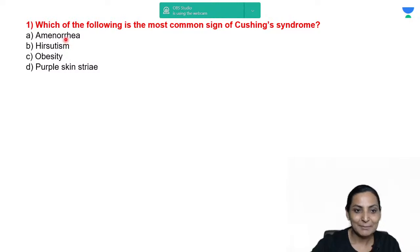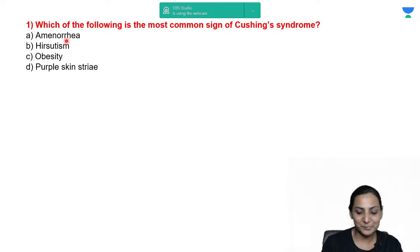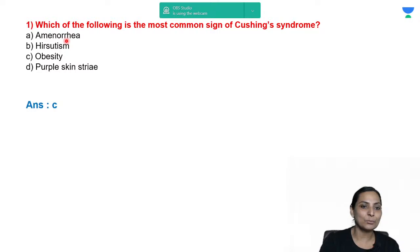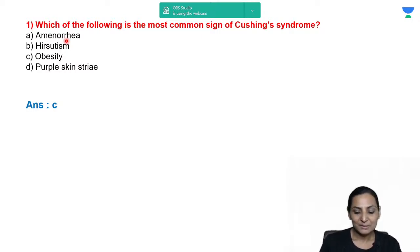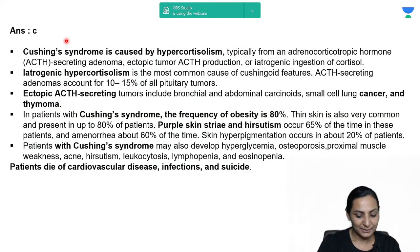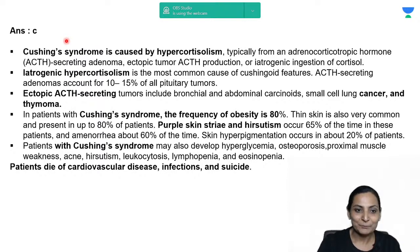Which is the most common symptom — among amenorrhea, hirsutism, obesity, or purple skin striae? The correct answer is C, that is obesity. When you speak of the most common sign, it is obesity.